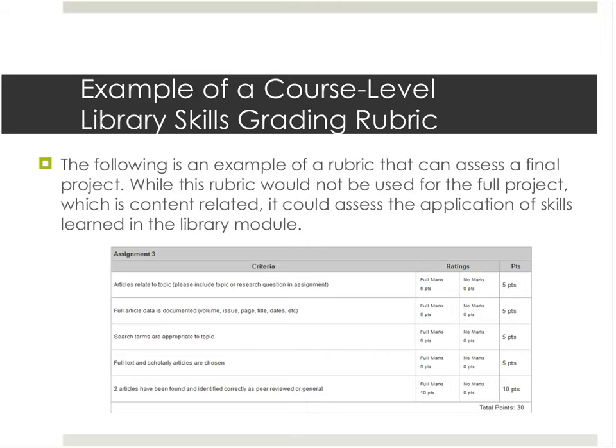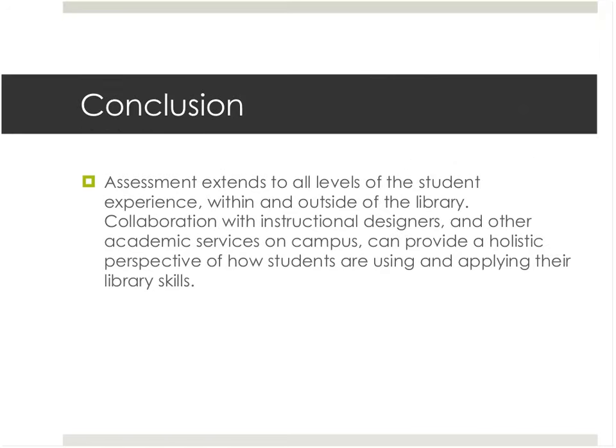This is an example of a rubric that might evaluate a full final project in this English class for library skills in particular. It's a very simple rubric that looks at whether they found the right type of information, whether it's full text and scholarly, whether it's on topic, and things like that. I'd love to hear any feedback about how librarians and instructional designers can work together to improve teaching and learning of library skills in online classes.